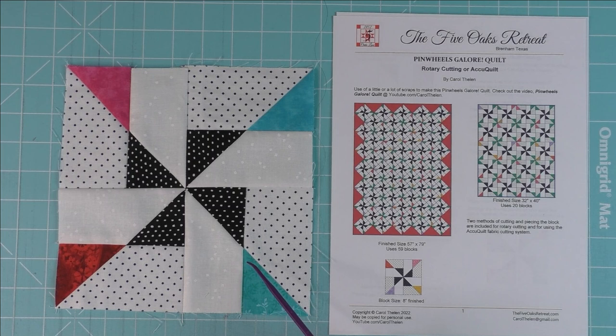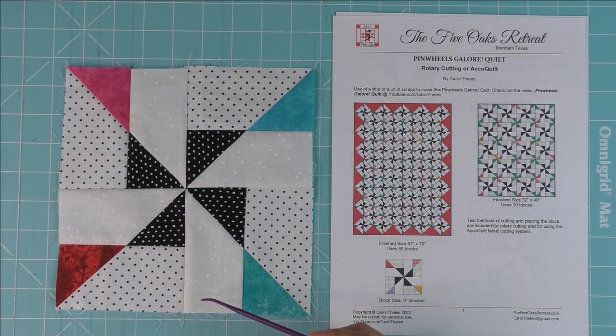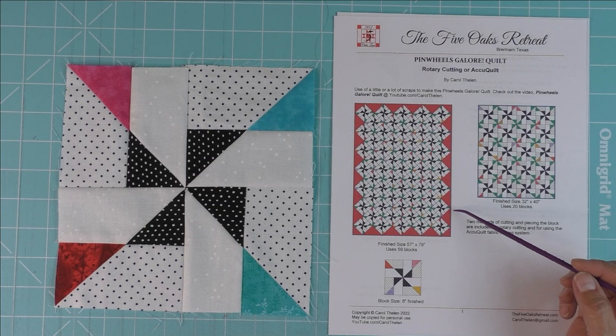I call this the pinwheels galore block because when you put the blocks together you have a lot of pinwheels, and you probably saw that on the quilt at the beginning. As usual, you have instructions and I'm giving instructions for rotary cut blocks and AccuQuilt cut blocks.